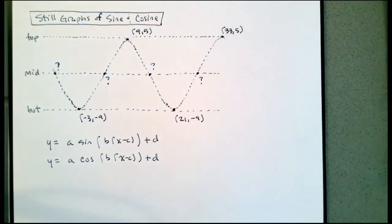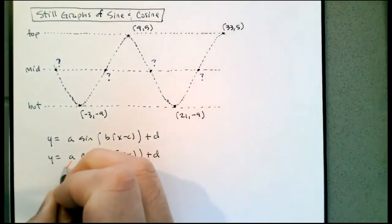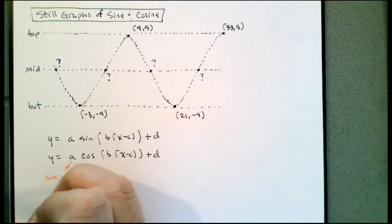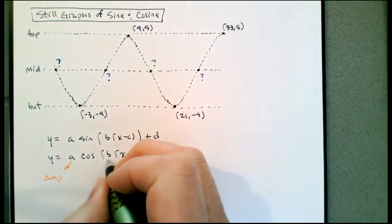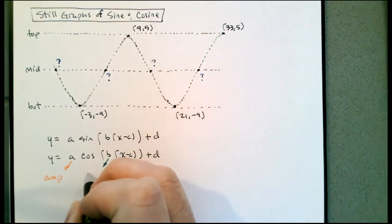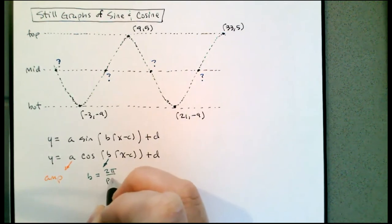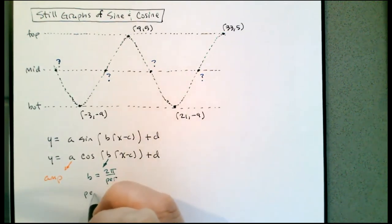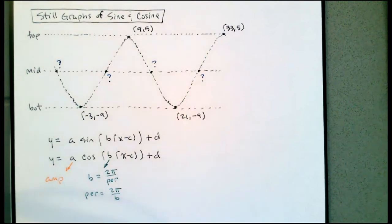Let's review the things that we need to find. A is the amplitude. B is a number that indicates the period — B is 2π divided by the period. This comes from the fact that the period is 2π divided by B. B tells us how fast we're going around the circle, so if B is 2 we're going around twice as fast and the period will be π.